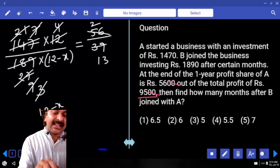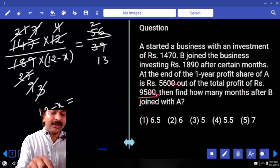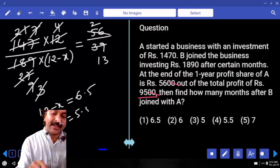That means 12 minus X is equal to 13 by 2 which is 6.5, then X is equal to 5.5.